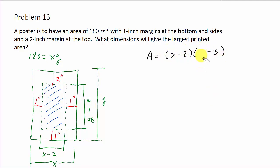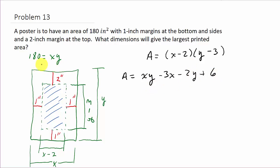So the area of the printed piece is (x minus 2) times (y minus 3). Let me expand this: that's xy minus 3x minus 2y plus 6. Now I need to get everything in terms of one variable. From the equation 180 = xy, I get y equals 180 over x.